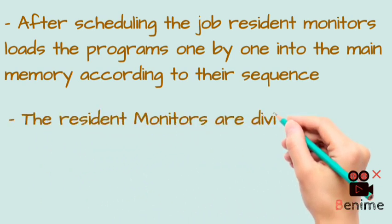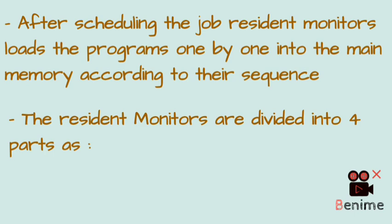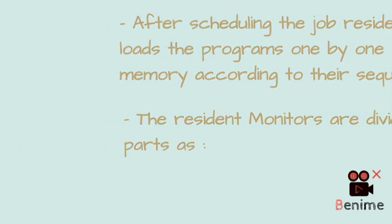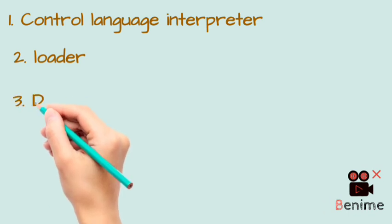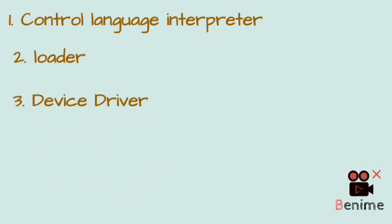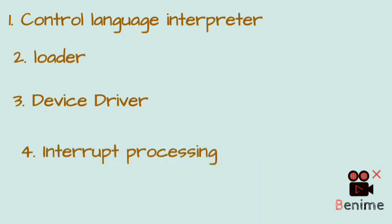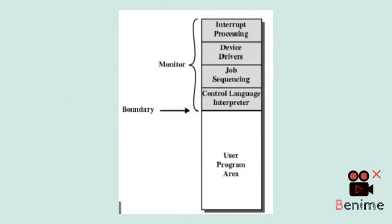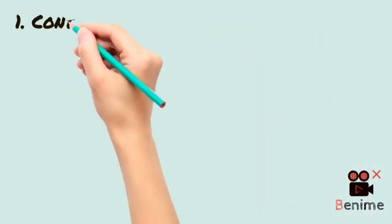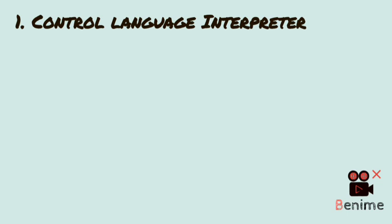Resident monitors are divided into four parts: the first part is the Control Language Interpreter (CLI), the second is the loader, the third is the device driver, and the fourth is interrupt processing. This diagram shows which parts are present — the job sequencer, control language interpreter, device driver, interrupt processing, and user program area.